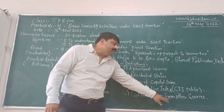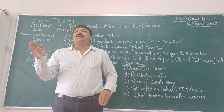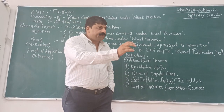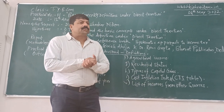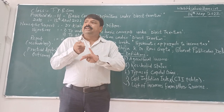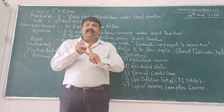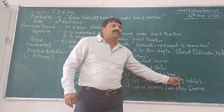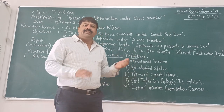And the list of incomes from other sources — any income which is not taxable under any head of income, like salary, house property, business, profession, or capital gains, such income will be grouped under income from other sources. Like winnings from lottery, winnings from races, gambling, smuggling, dividend received, interest received, incomes from investments — all these are incomes from other sources. You have to write down that index by using the reference.